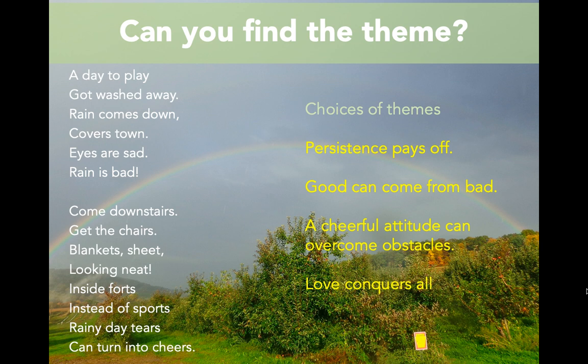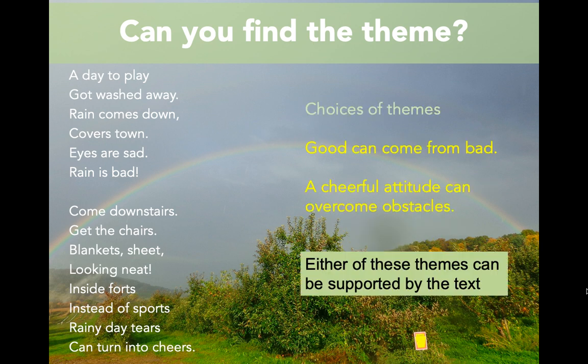Put your thumb up if you think you've got it. Love conquers all? Well, we don't really see that in this poem. Persistence pays off? No, no one's really persevering. Either of these two themes can definitely be supported by this poem: good can come from bad — the author made the best of the rain and chose to make it into a good situation — and a cheerful attitude can overcome obstacles. Those are two great themes for this text.